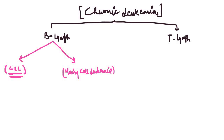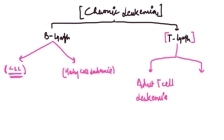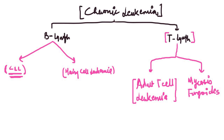The question arises about the T-cell. The chronic leukemia may also arise from the T-cell, and there are two conditions in which leukemias are derived from the T-lymphocytes. These two pathologies are: first, the adult T-cell leukemia, and the second condition is called mycosis fungoides. In this video, we'll primarily focus on adult T-cell leukemia and its clinical features, while in subsequent videos we'll discuss mycosis fungoides separately.